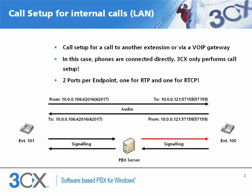For internal calls the SIP server only sets up the call; it does not deliver the audio. Consequently, since extension 100 and extension 101 are on the local LAN, the SIP server will organize that the phones will be connected directly with each other. In this example, two ports will be used per phone. Extension 101 will signal to receive audio on port 42016, with 42017 reserved for RTCP, the RTP control channel.